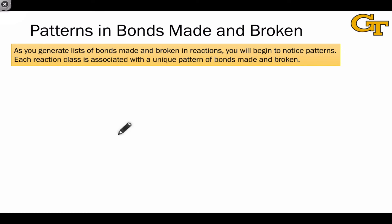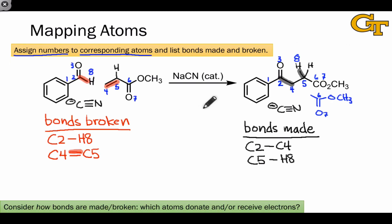As you do atom mapping and generate lists of bonds made and broken more and more, you will begin to notice patterns in the types of bonds made and broken. In this last example, we can notice from the way the reactants combined, the fact that there are no byproducts, and that new bonds were made between all of the atoms of the aldehyde and all of the atoms of this unsaturated ester, that this is an addition reaction. Listing the bonds made and broken and recognizing there are no byproducts helps us see this.